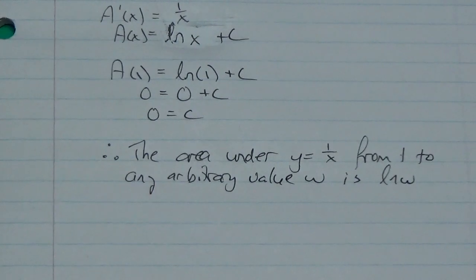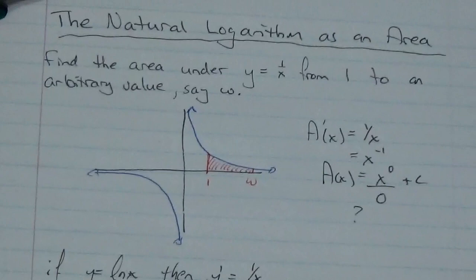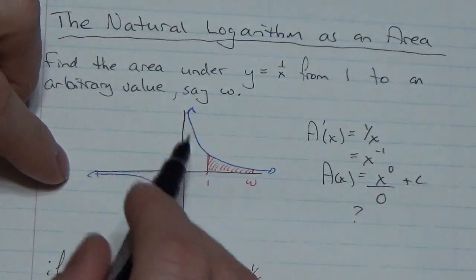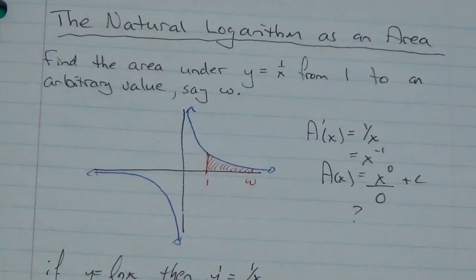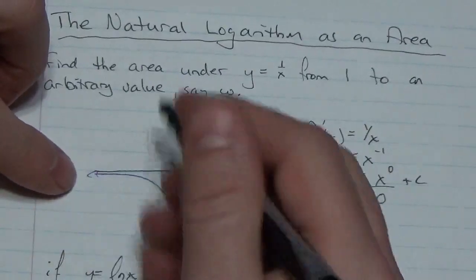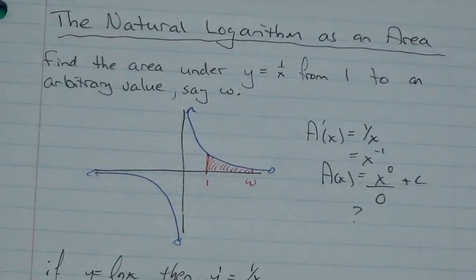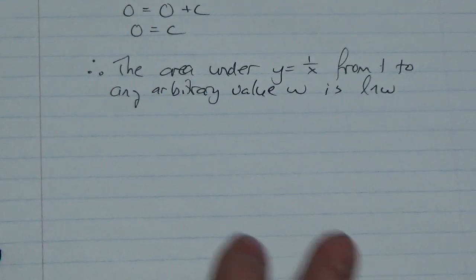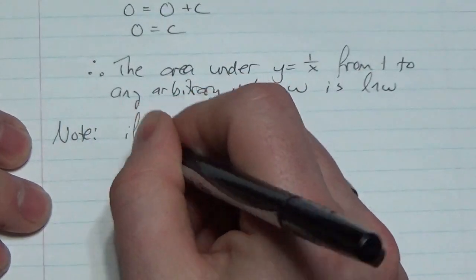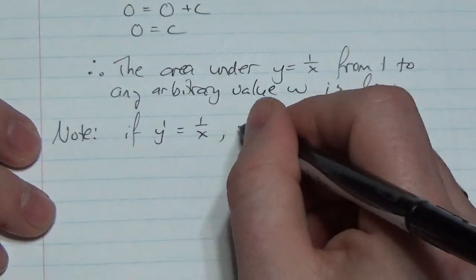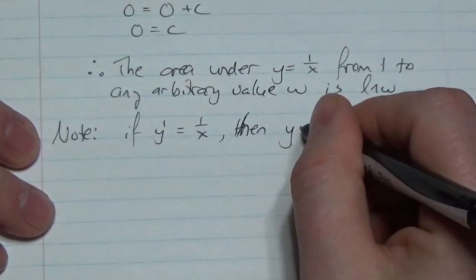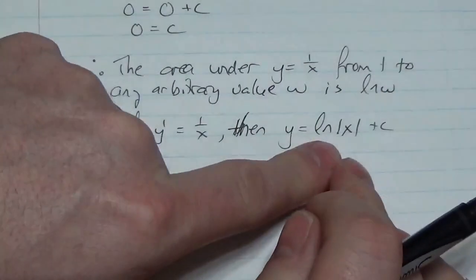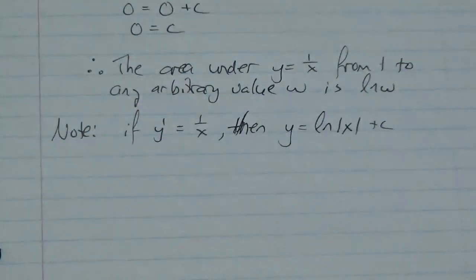One thing to note: the function y equals 1 over x exists on both sides of the y-axis. A natural log is not defined for negative x. So we need to alter the antiderivative: if y prime equals 1 over x, then y equals the natural log of the absolute value of x plus c. This allows the function to be used on both sides of the y-axis, though we still can't cross it.